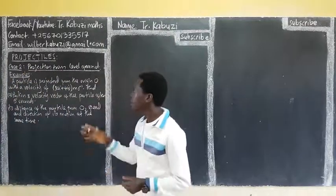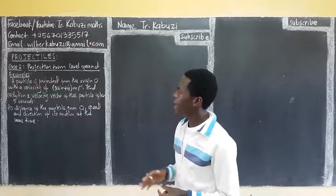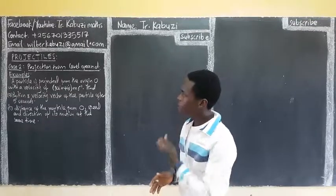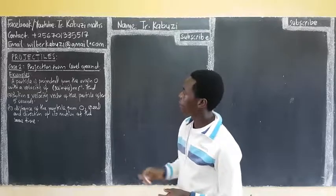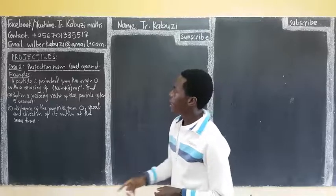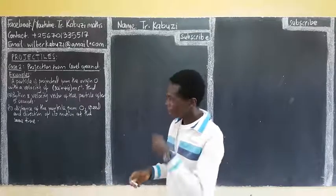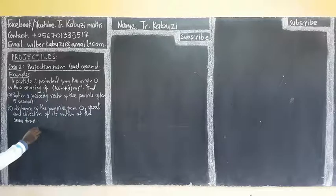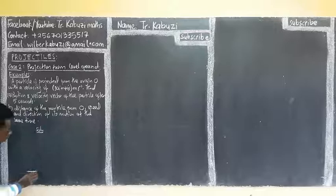Now, let's see how we handle the equation when they are giving us the velocity — the initial velocity — in terms of i-j notation. The particle is projected from the origin with a given velocity, so we draw a simple sketch. Our particle is going to be projected from the origin.